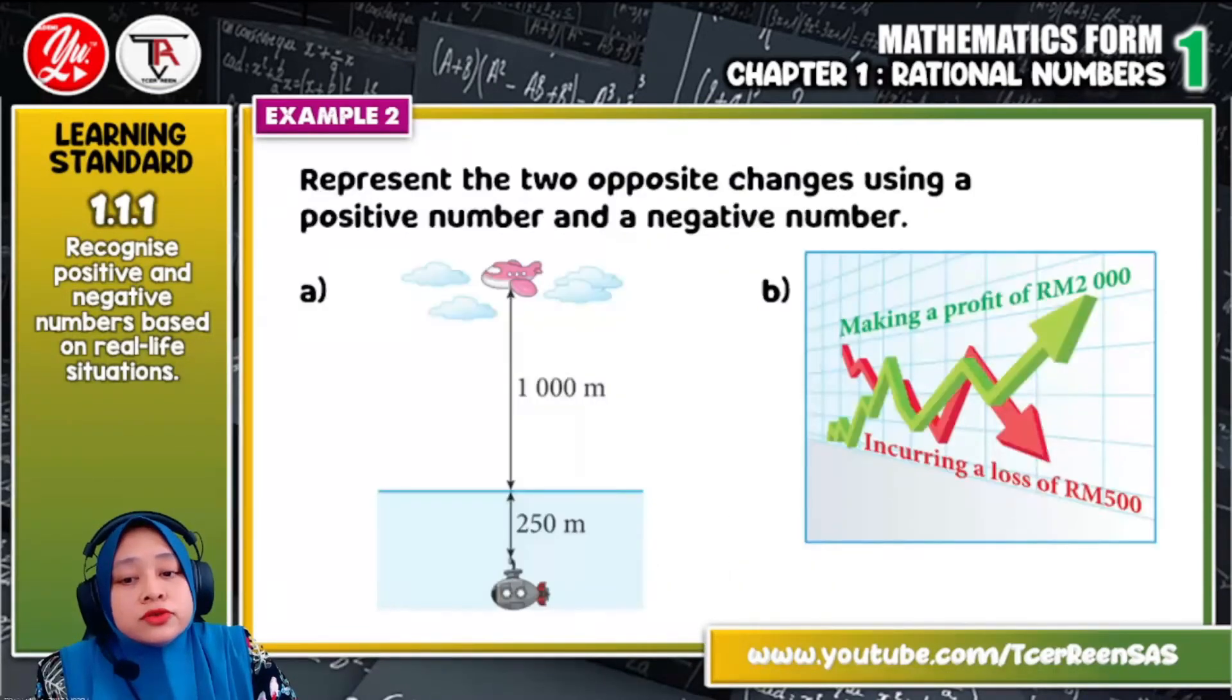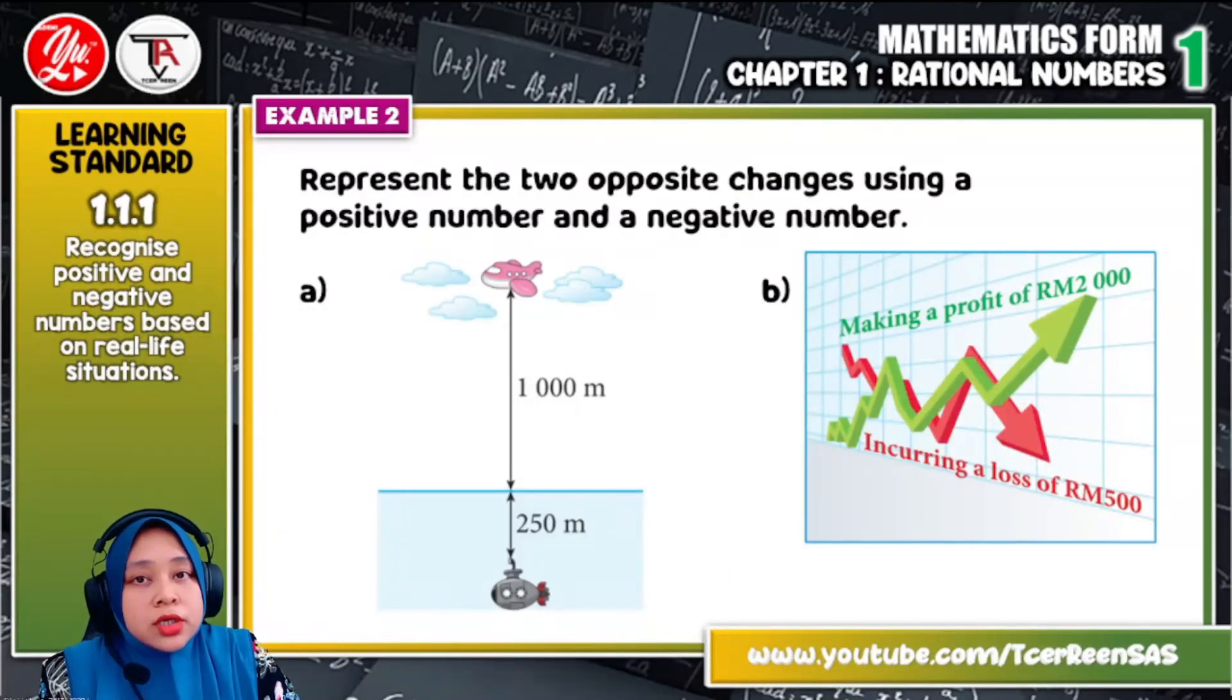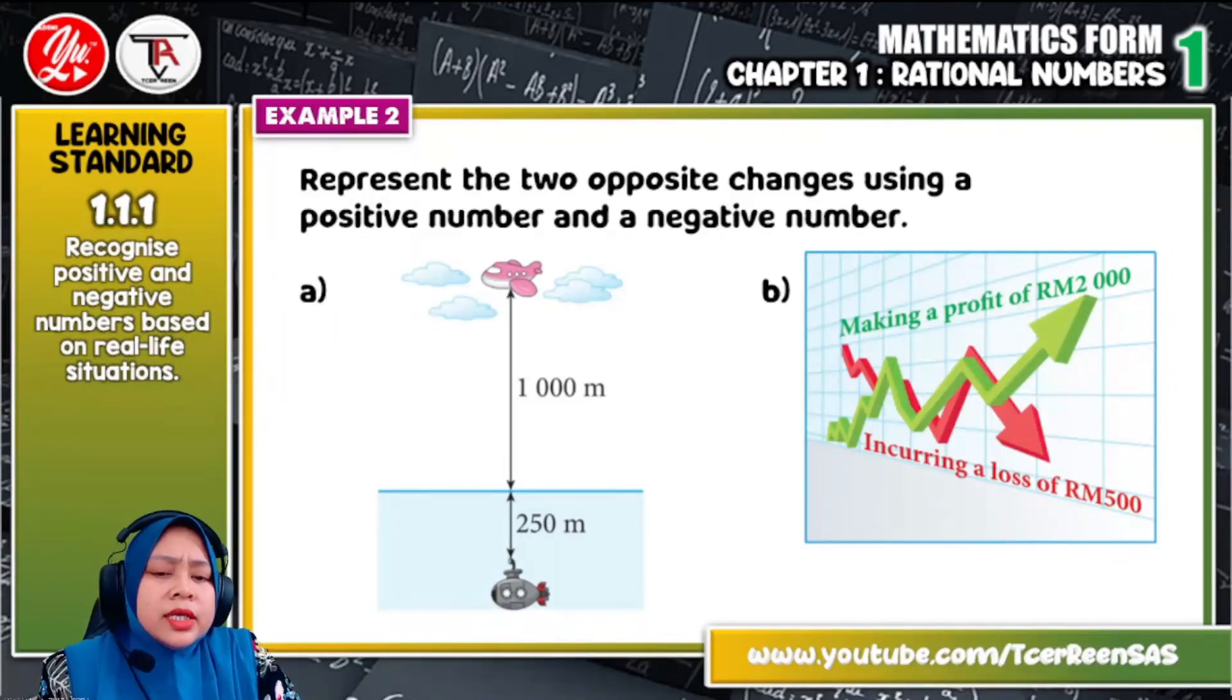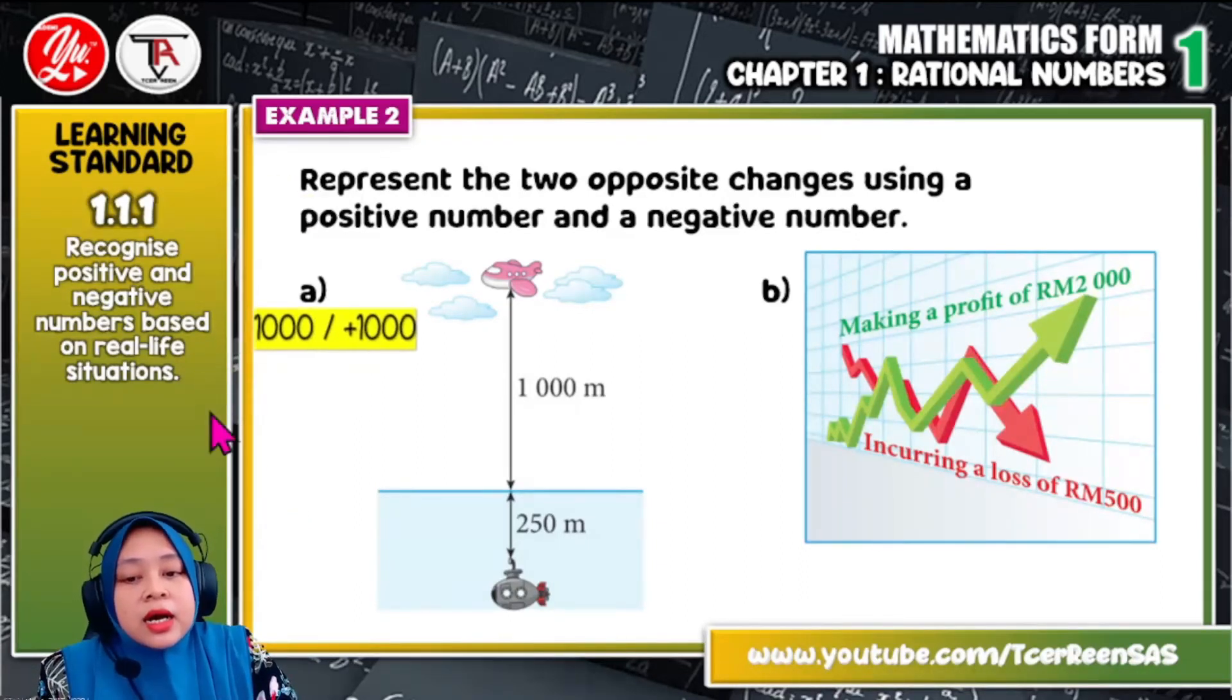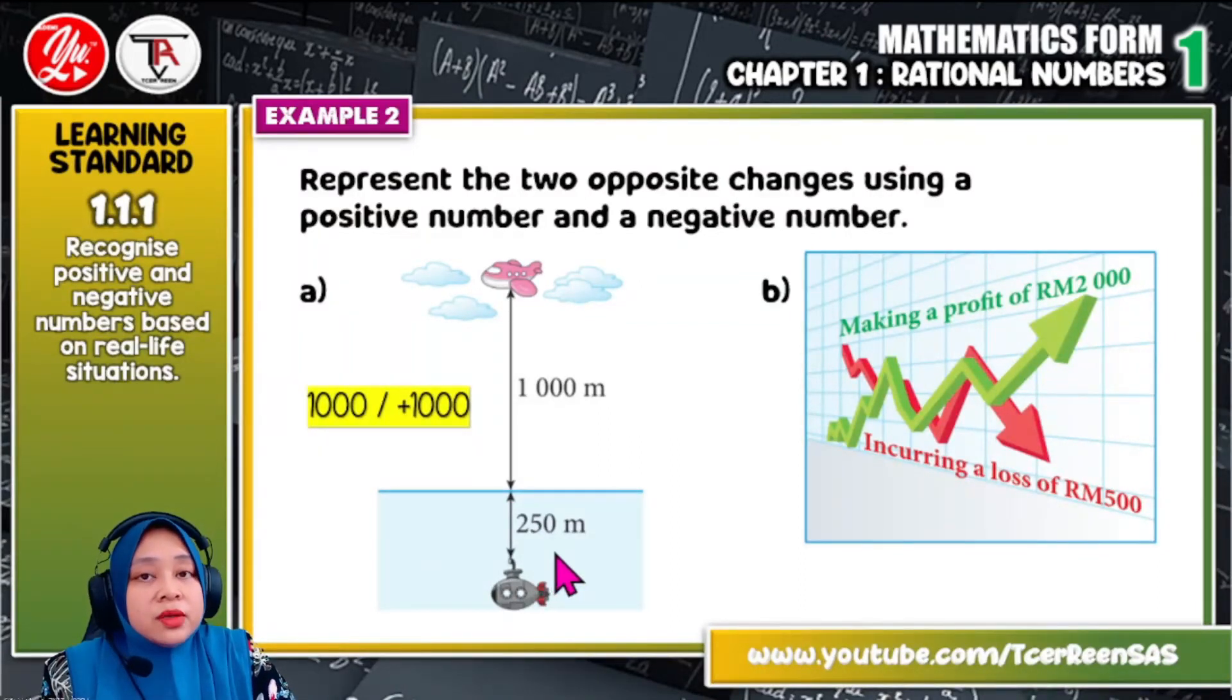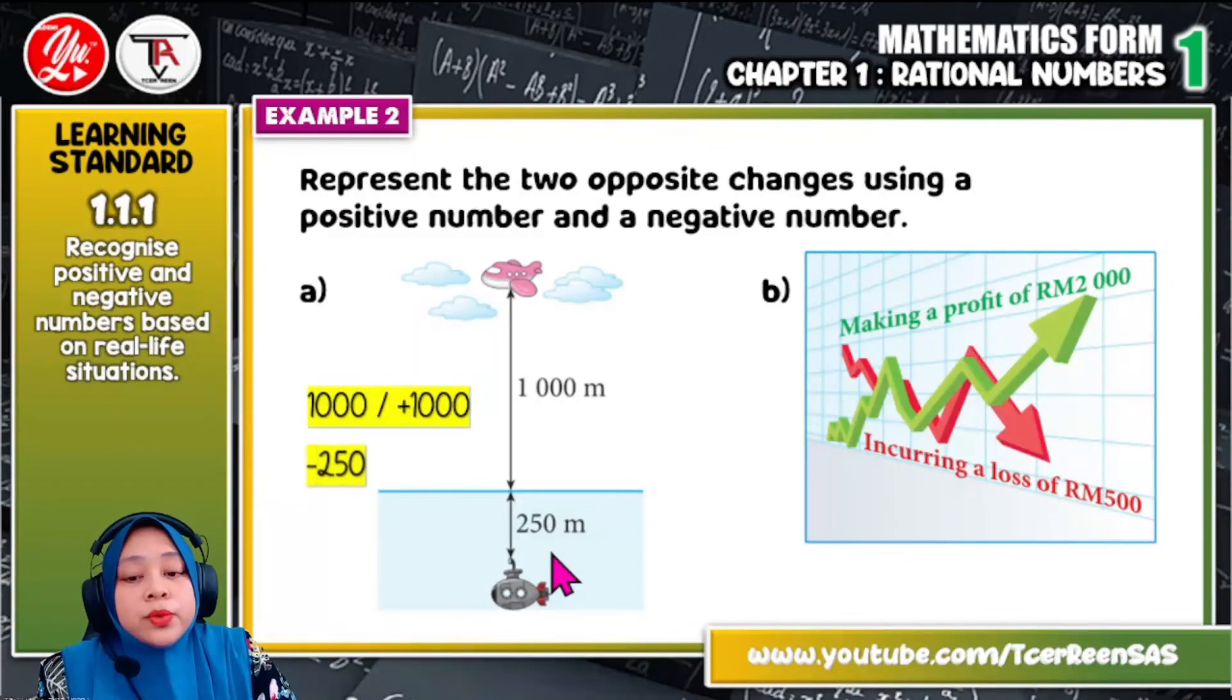Okay, let us move on to example 2. The question asks us to represent the two opposite changes using positive numbers and a negative number. Let us refer to question A first. Okay, the airplane is 1,000 meter above sea level. So above, we write it as 1,000 or plus 1,000. Okay, and then the submarine is below sea level, 250 meter. So how to write it is we put the negative sign, which is negative 250.